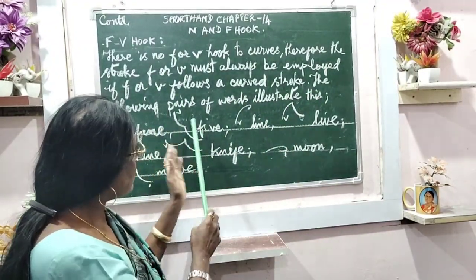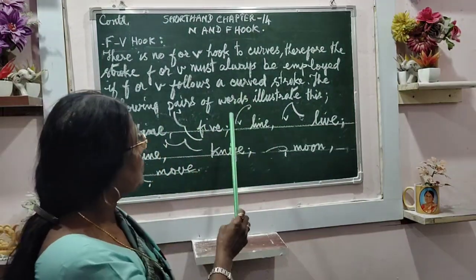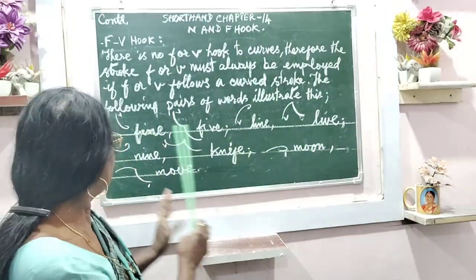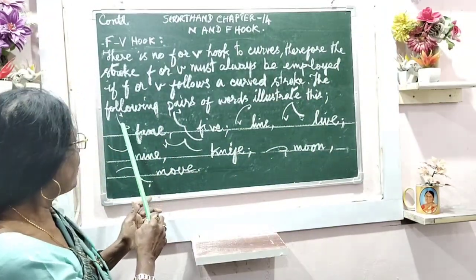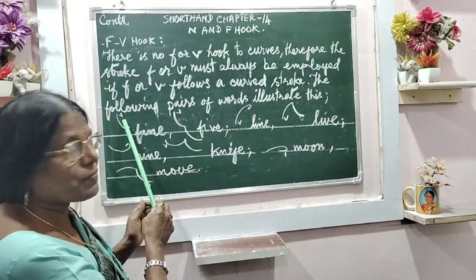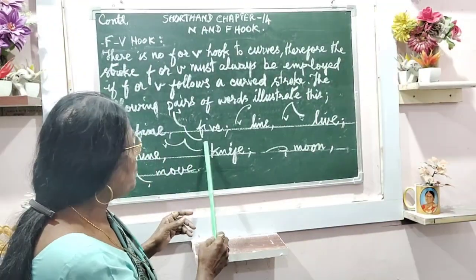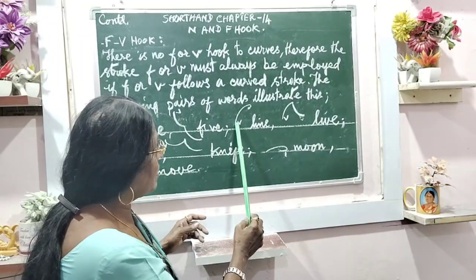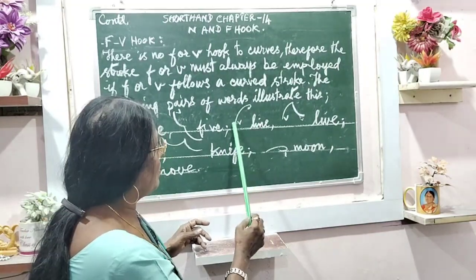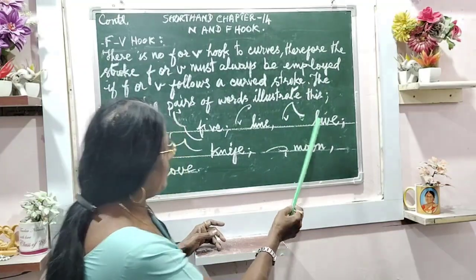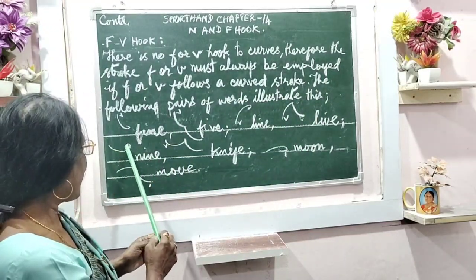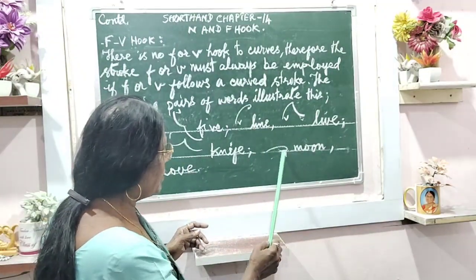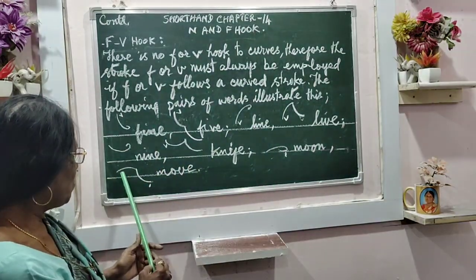The following pairs of words illustrate this. Fine — F stroke — fine. File. And line, line. Live. Nine. Knife. Moon and move.